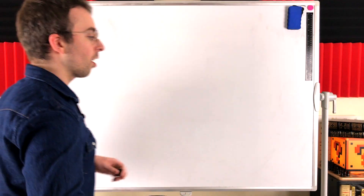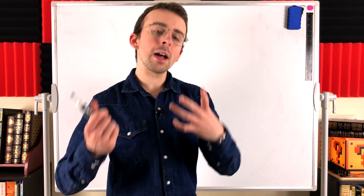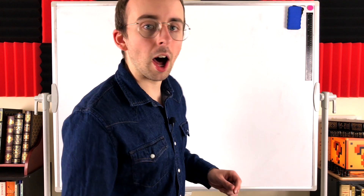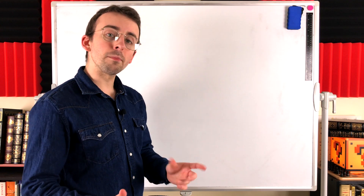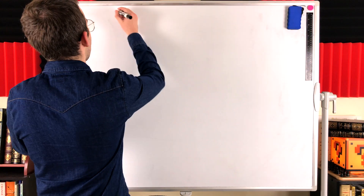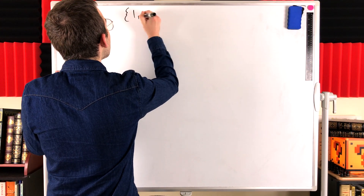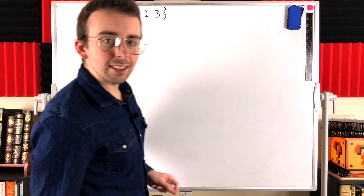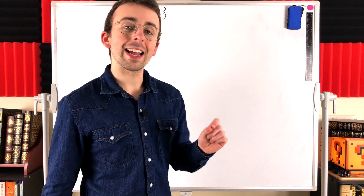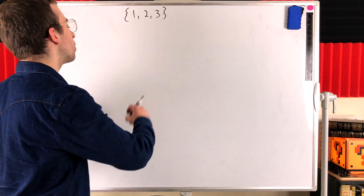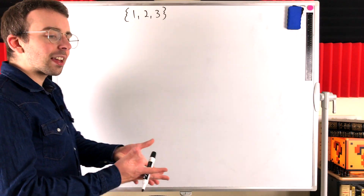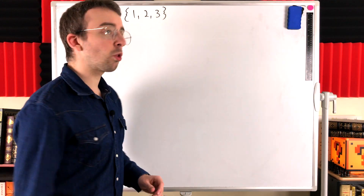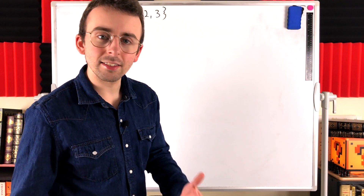Let's quickly do some intro stuff. A bell number counts the number of partitions of a set with a certain number of objects. So for example, the bell number B3 is the number of ways we could partition a set that contains three objects. You can think of a partition of a set of objects as being a sorting of the objects into disjoint subsets.